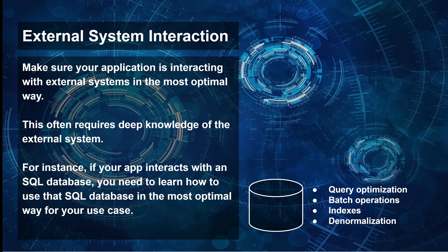The ninth principle is external system interaction optimization — make sure your application is interacting with external systems in the most optimal way. This often requires deep knowledge of the external system. For instance, if your app interacts with an SQL database, you need to learn how to use that database optimally for your use case. This could include query optimizations, batch operations, indexes on tables, and denormalization of tables and data.